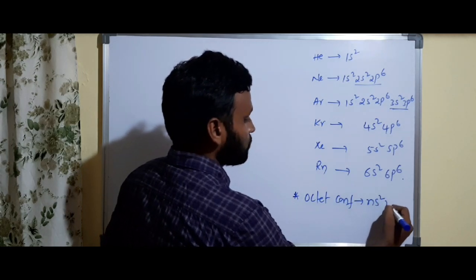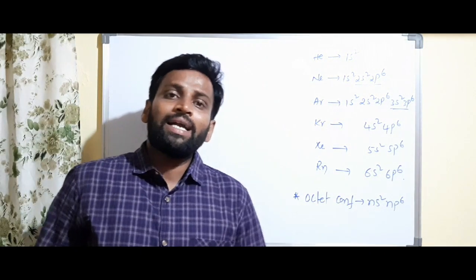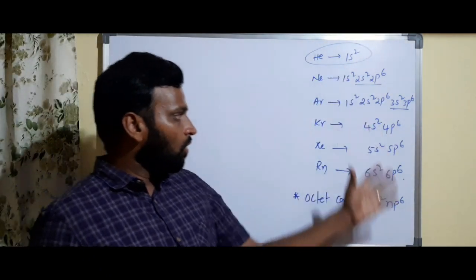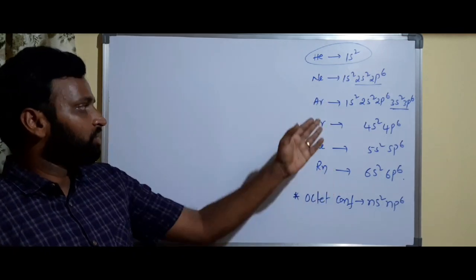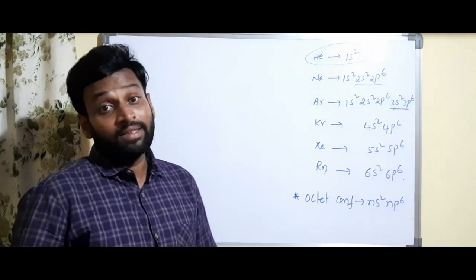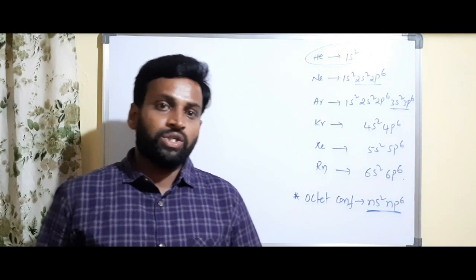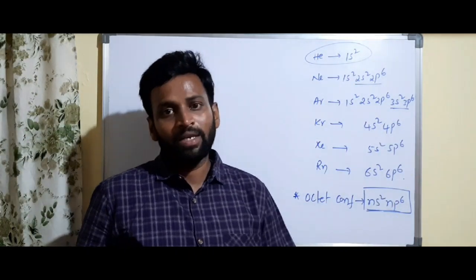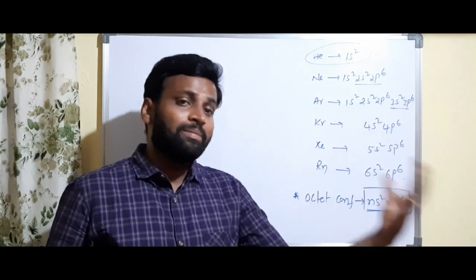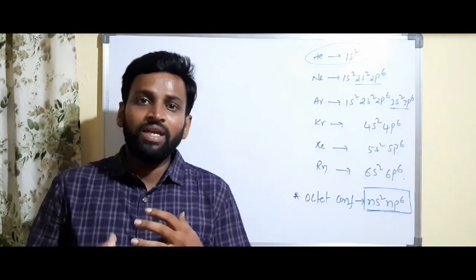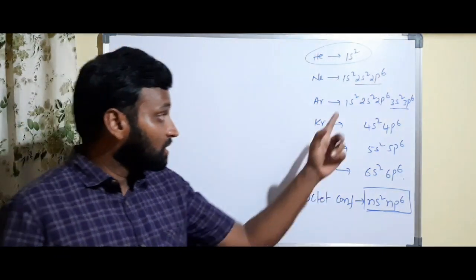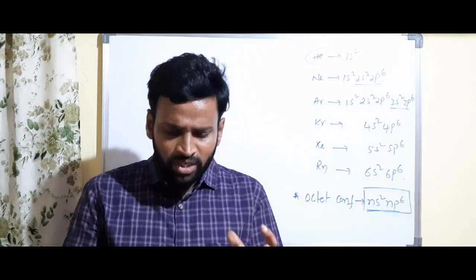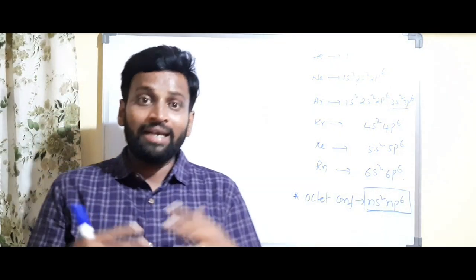Octet configuration uses ns², np⁶. Every atom will try to get the same kind of electronic configuration — maybe except helium, a few will try to get helium configuration. But remaining elements will try to get configurations like neon, argon, krypton, xenon, or radon. This outermost configuration is the general electronic configuration of noble gases: ns², np⁶, common in every noble gas at the last shell. So every atom will try to get stability by gaining, losing, or sharing electrons, forming a chemical bond.